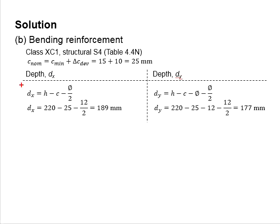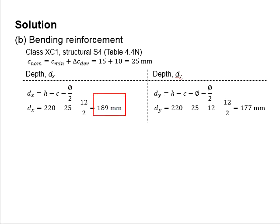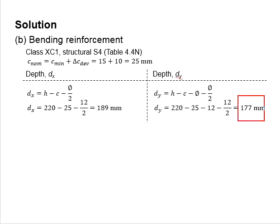The effective depth dx is calculated by subtracting the cover and half the reinforcement bar diameter from the slab thickness, giving 189 mm. For dy, another layer of reinforcement is provided in the transverse direction, so dy equals the slab height minus the cover, minus the bar diameter of the main reinforcement in dx, and minus its own bar diameter, giving dy equals 177 mm.